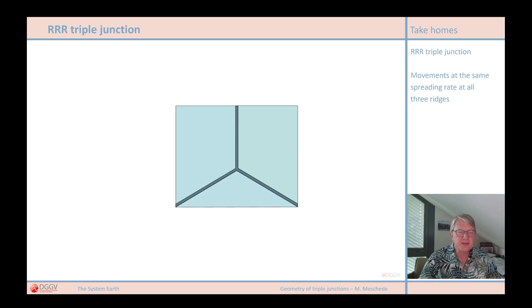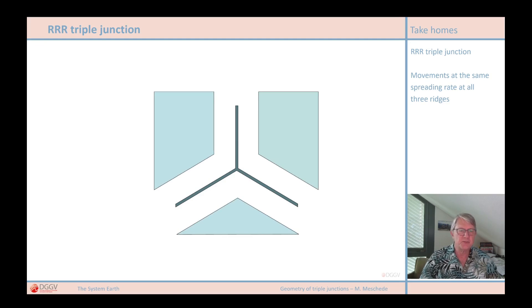There is no mechanism that could explain why more oceanic crust would form on one side of the spreading zone than on the other. Therefore, we have to assume symmetrical spreading.